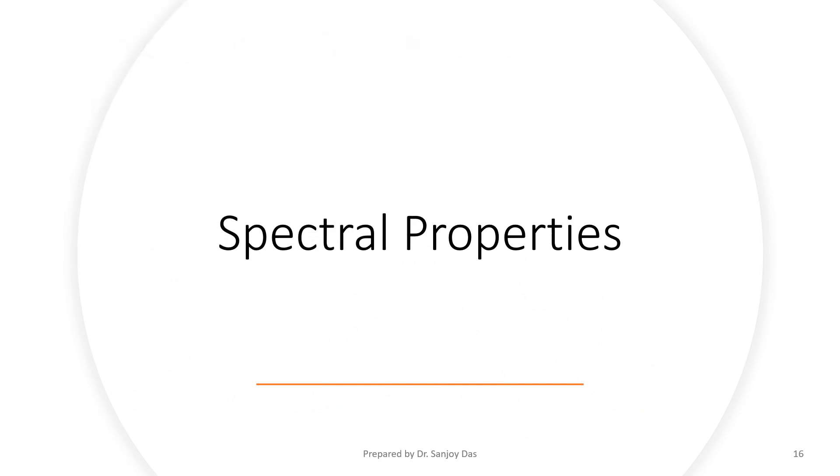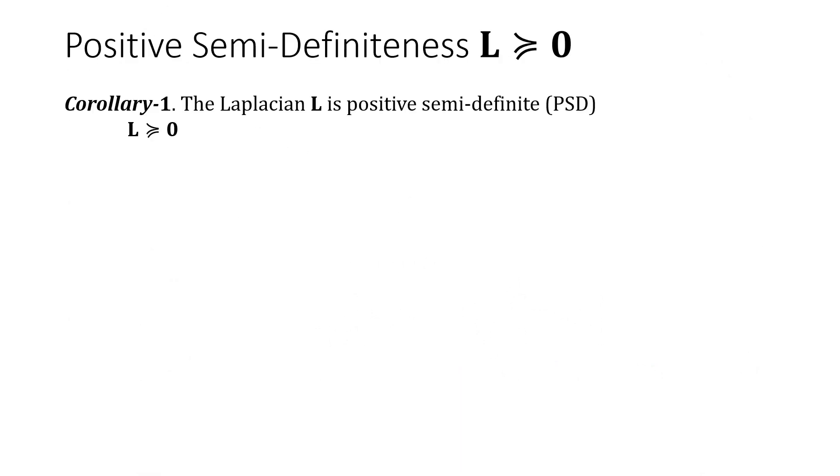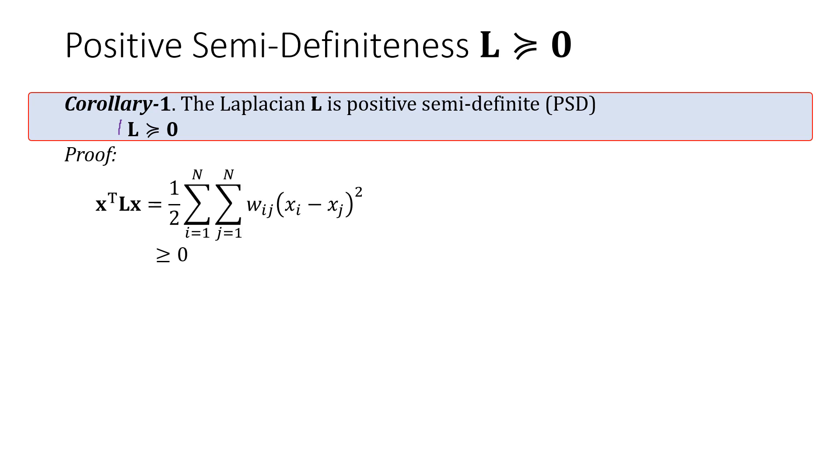Spectral properties. Corollary 1. The Laplacian is positive semi-definite. So this L is positive semi-definite. This is corollary 1. And how do we prove it? It's a very straightforward proof.